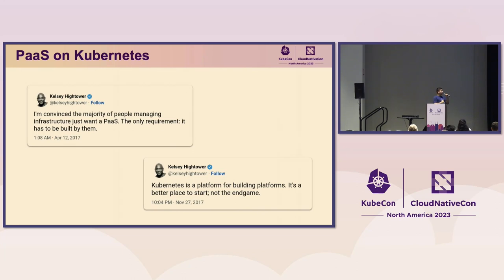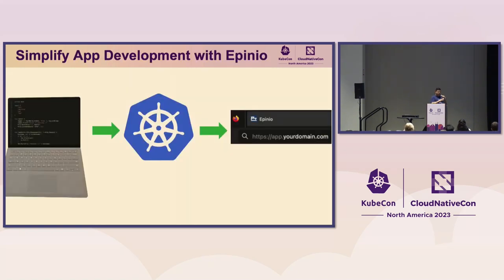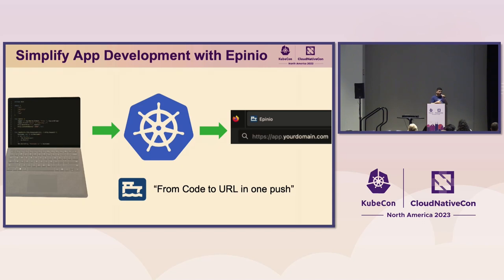Here are a few tweets about platforms on Kubernetes from Kelsey Hightower. One is: I'm convinced that most people want to just have a platform, but the only requirement is that they have to create it. The other: Kubernetes is a platform for building platforms — it's a better place to start, but not an end game. So we have this open source project called Opinio, and the goal of Opinio is to simplify application development — to make it easier for developers to push source code to a Kubernetes cluster and have it just work. We say: from code to URL in one push.